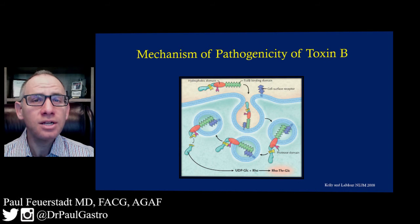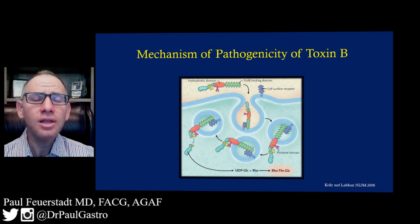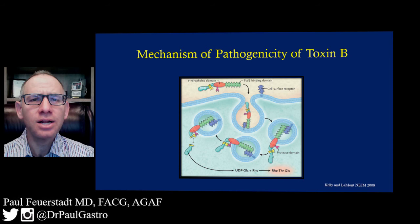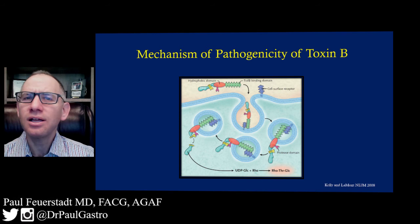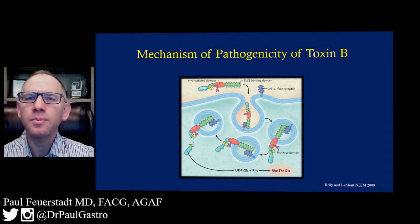There is then a conformational change of the protein, and glucosyltransferase is released into the cytosol. Once in the cytosol, it binds onto a Rho protein at a conserved threonine residue, ultimately inhibiting the development of actin filaments in the cytoskeleton. The cytoskeleton collapses and the cell undergoes lysis. With cell death, there is more distance between colonocytes, more fluid flows into the colon, and ultimately patients develop diarrhea.